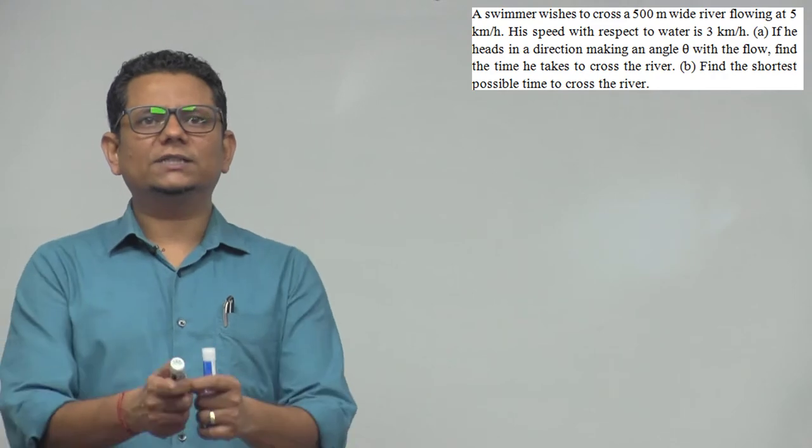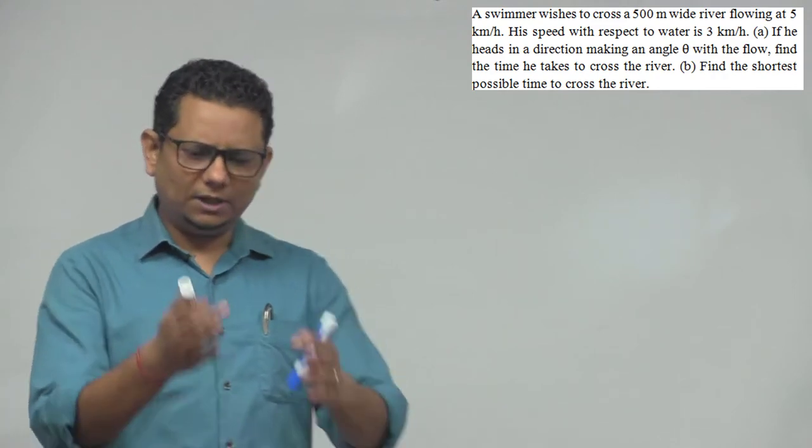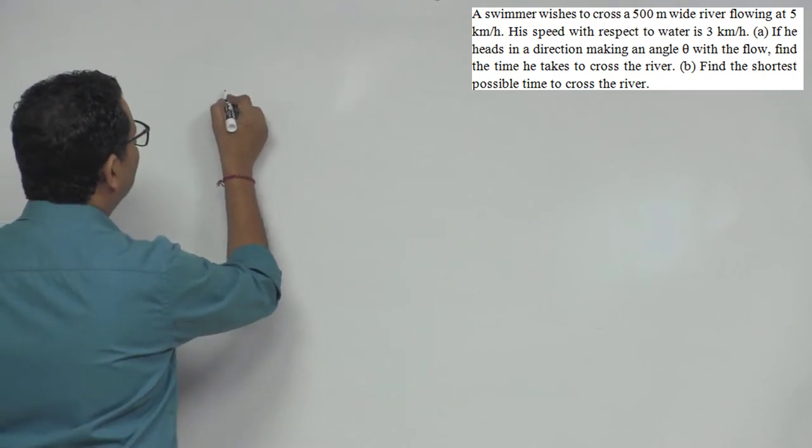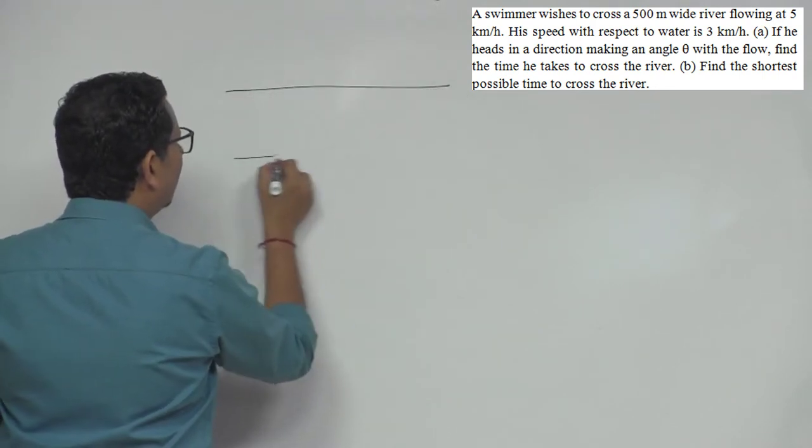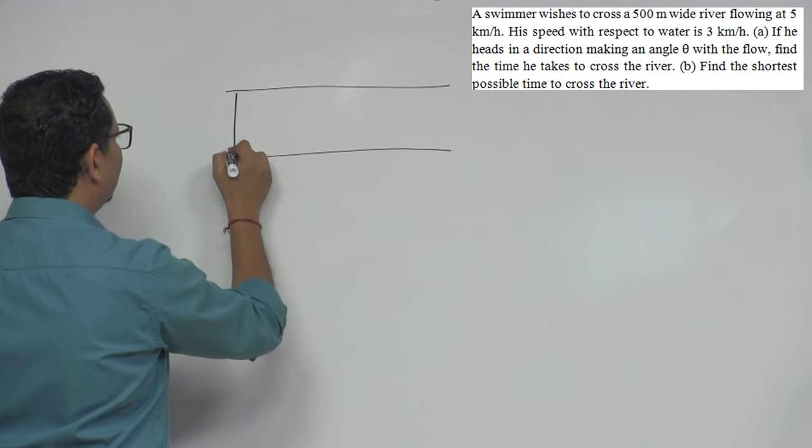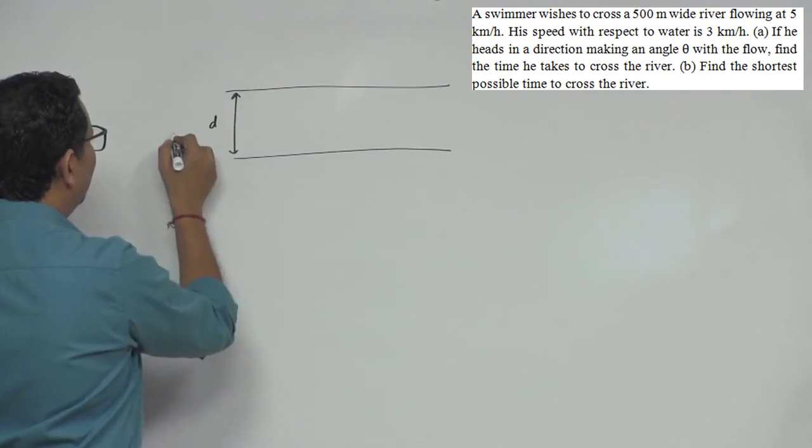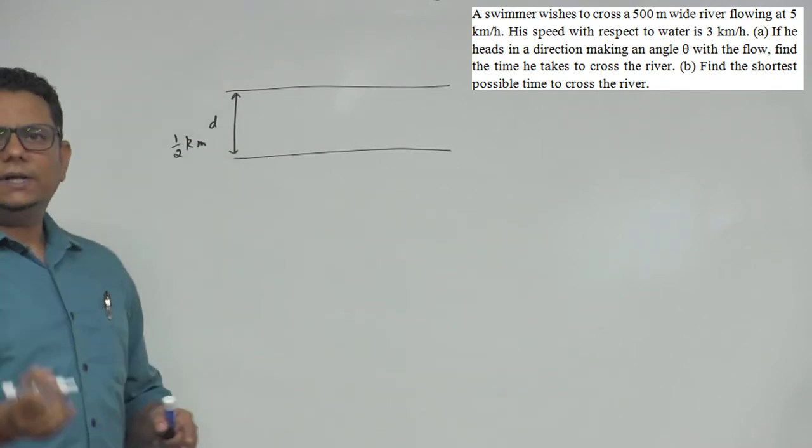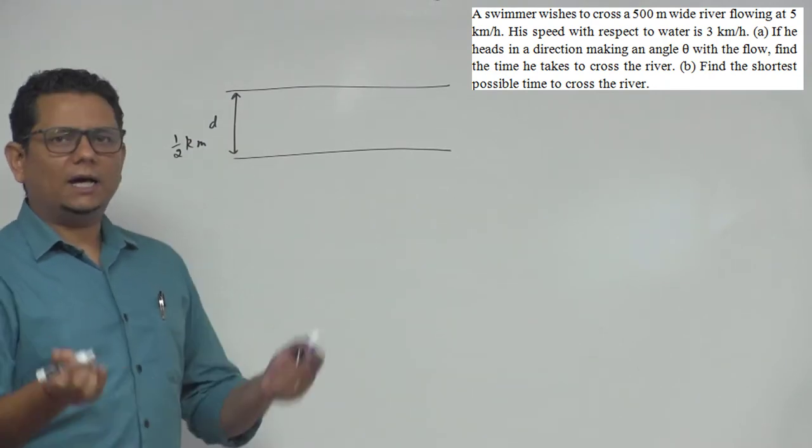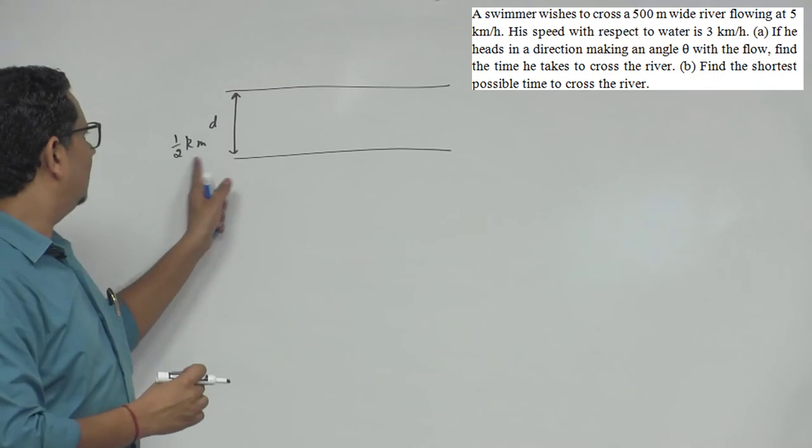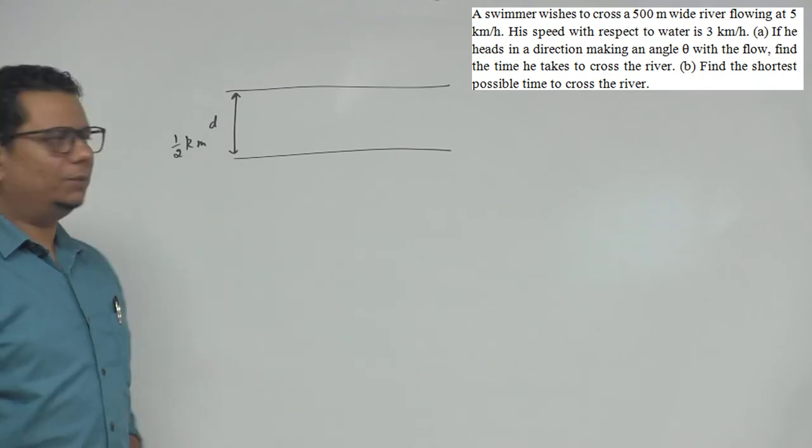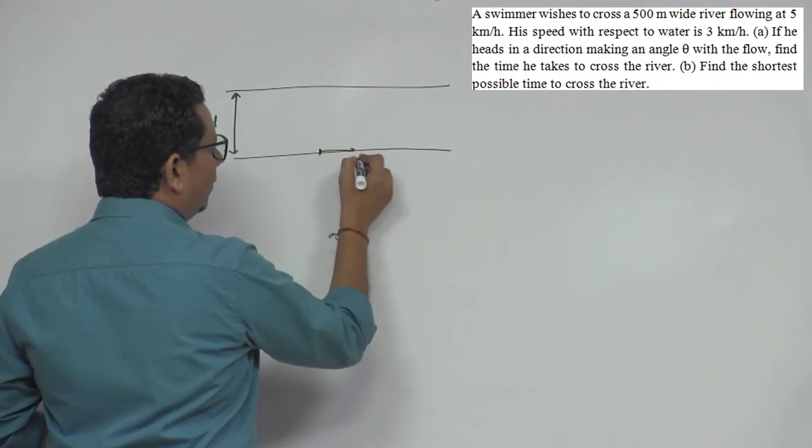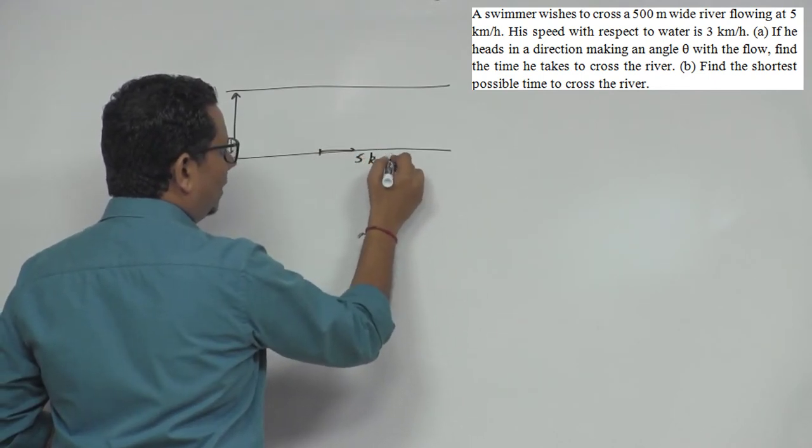Find the shortest possible time to cross the river. Now the situation here is a river with width of 500 meters, but the data is in km per hour so let's convert that into km. This is half km, which is the river width.